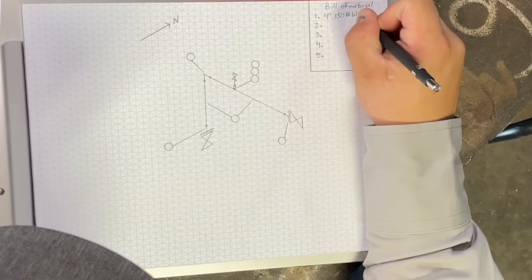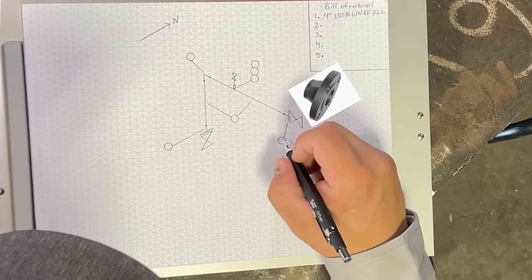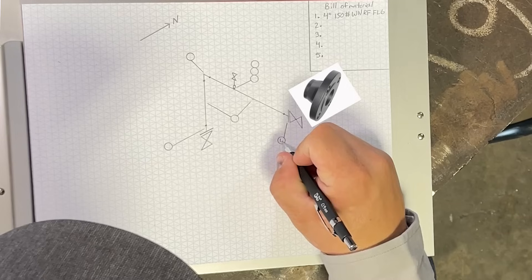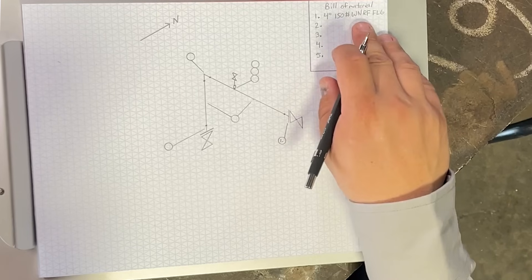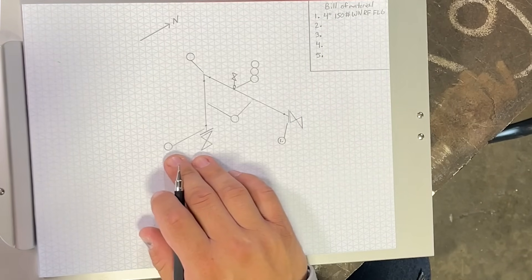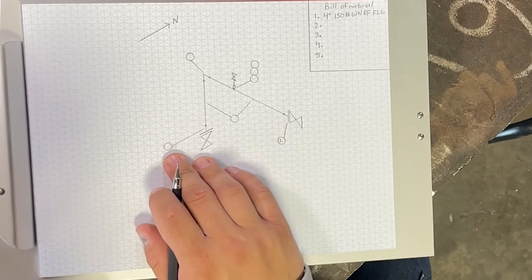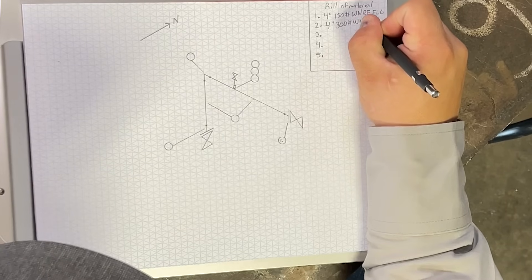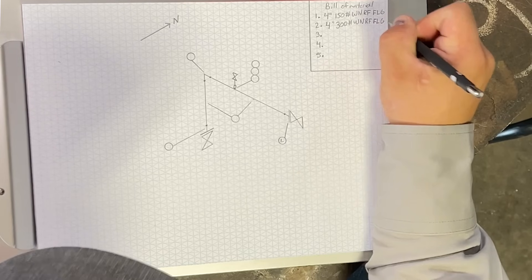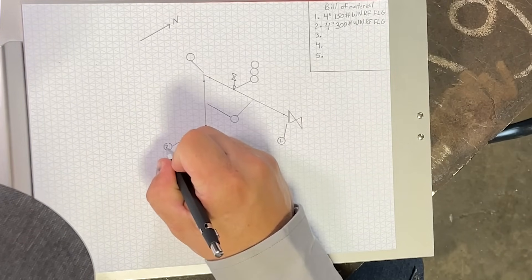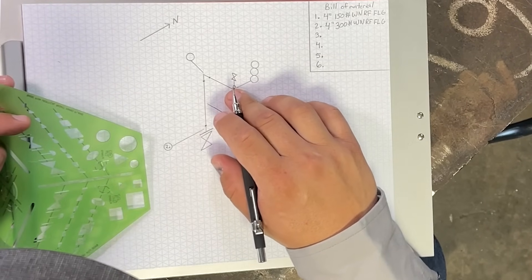Start off with one here and we're going to make this a four inch, 150 pound, weld neck, raised face flange. This will be one. So I'm going to go here and draw one, specifying that's our four inch, 150. On this one, we will be changing it. We'll say that this one is a four inch, 300 pound, weld neck, raised face flange. We'll go ahead and put our two here.